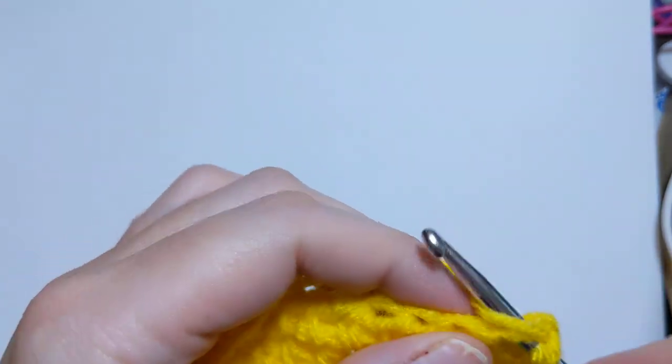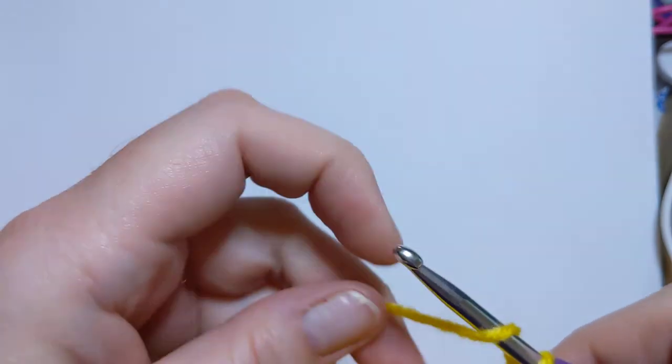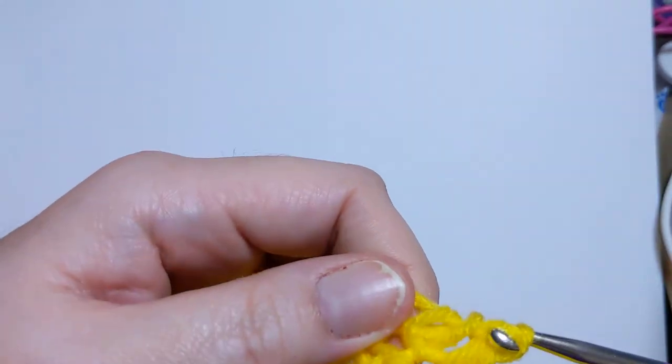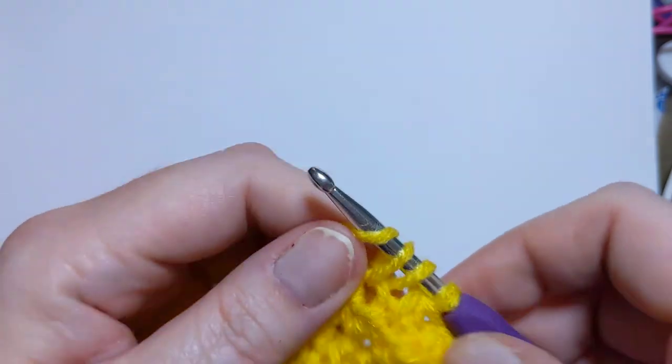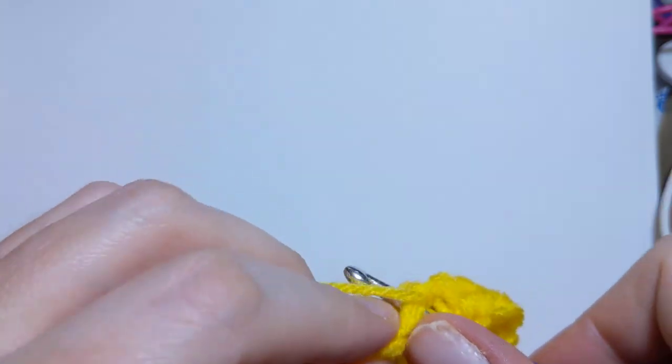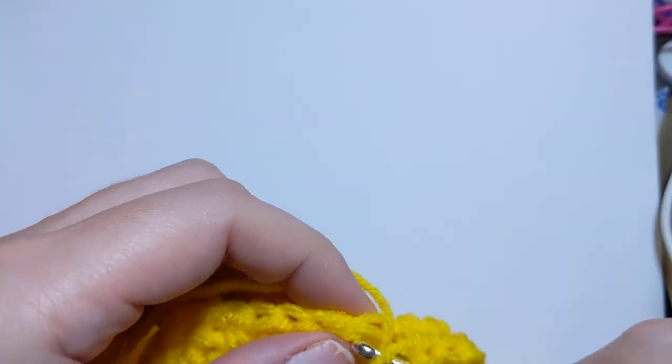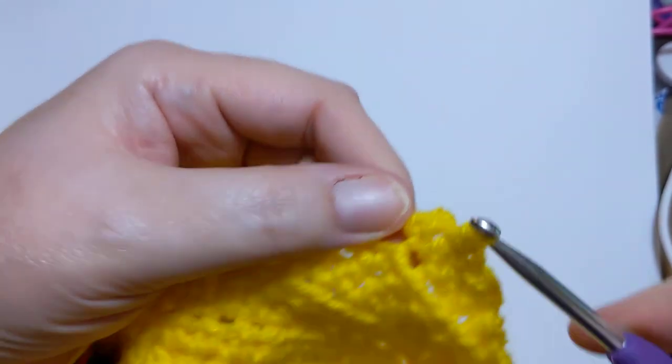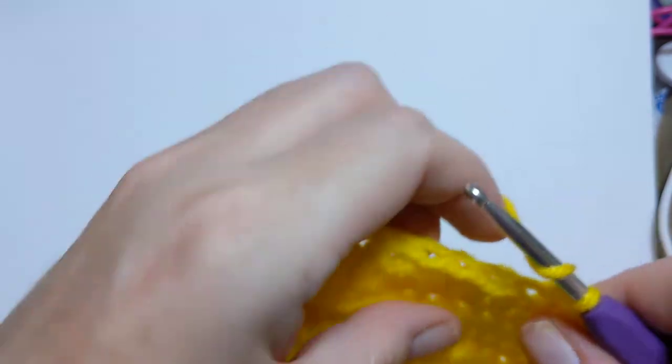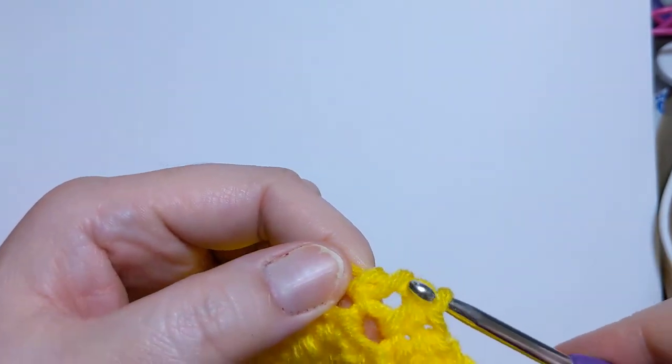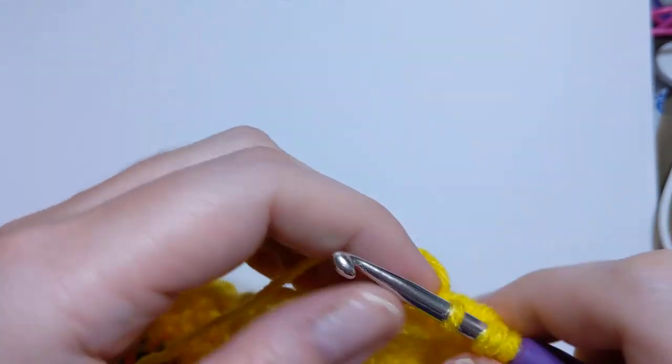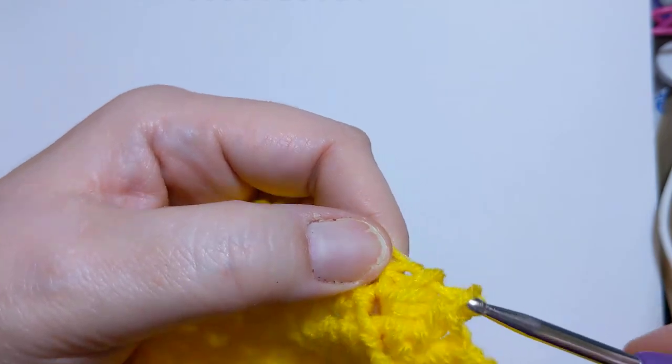I'm going to yarn over and just start doing some half double crochets. One stitch. Two. Three. Sorry for that bump, y'all. Four. Pull out some more yarn. And at this, I think this is what we're going to do. Pull up a loop on the fifth one. Go through. Pull up. All of those. And then half double to the end of the row.